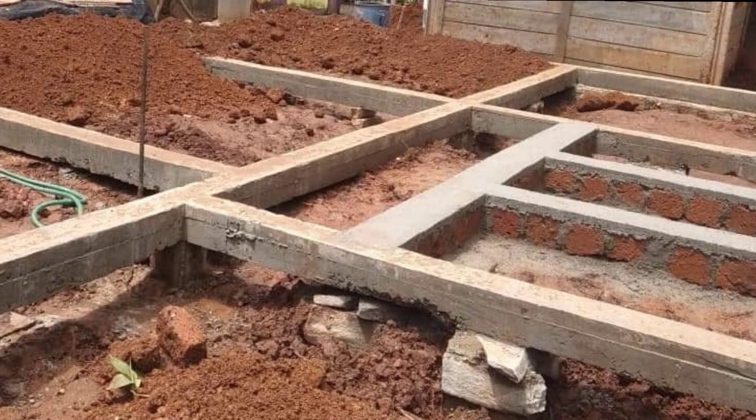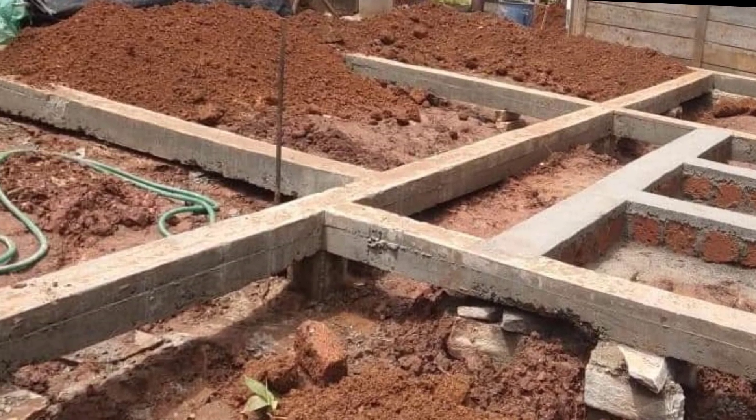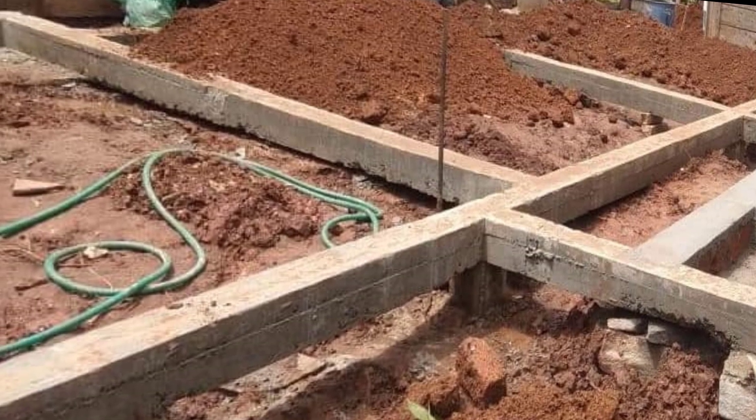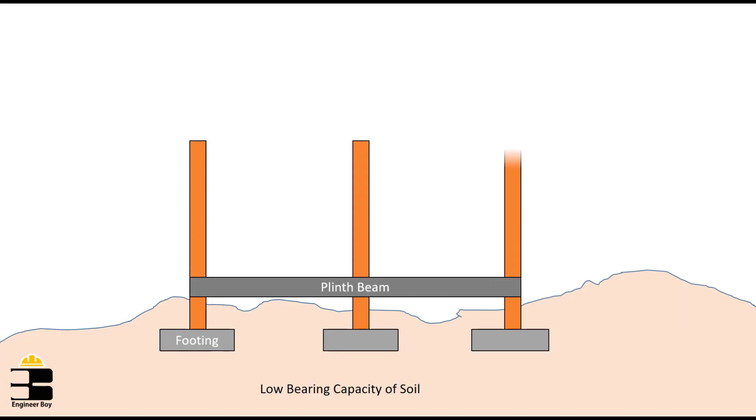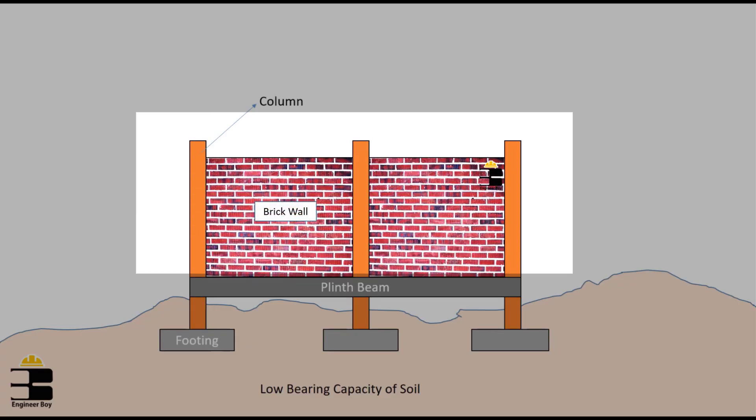Plinth beams are commonly used in areas with a high risk of soil erosion or in buildings constructed on soft soil. These structures provide additional support to the building in the event of an earthquake or other seismic activities.